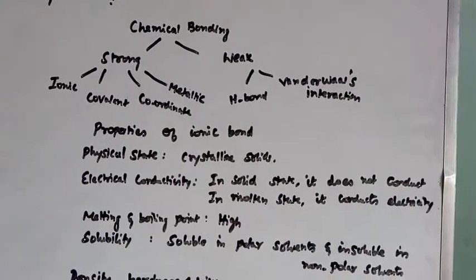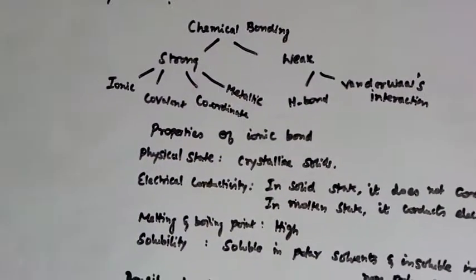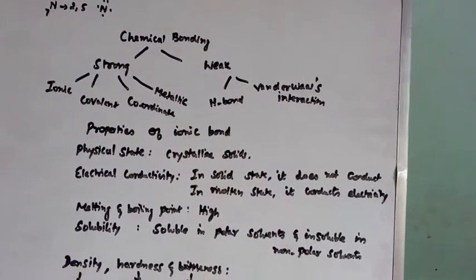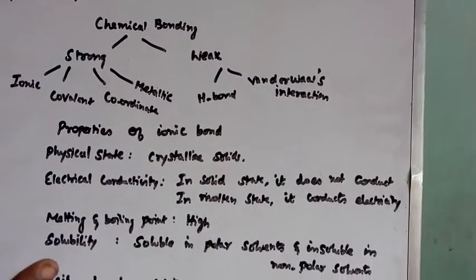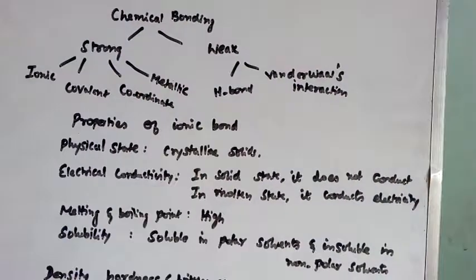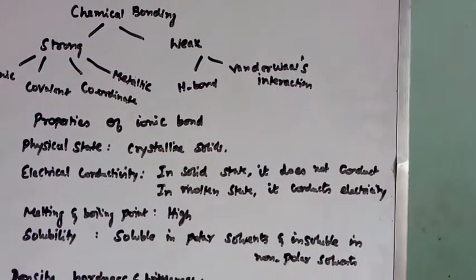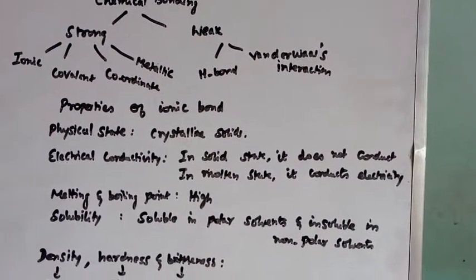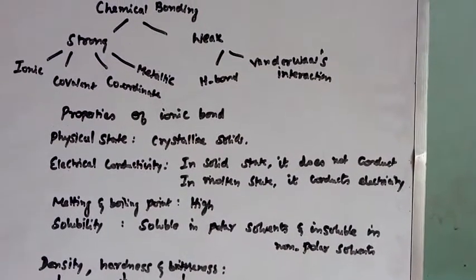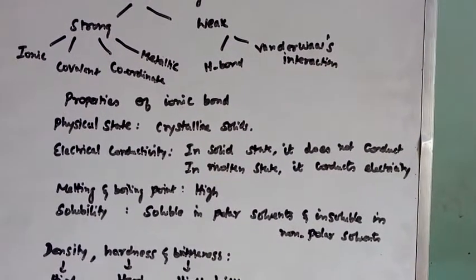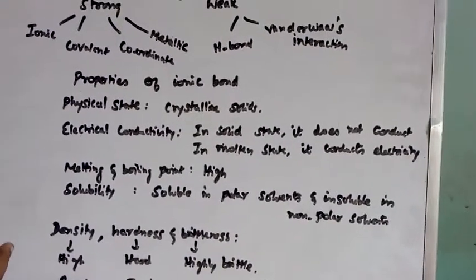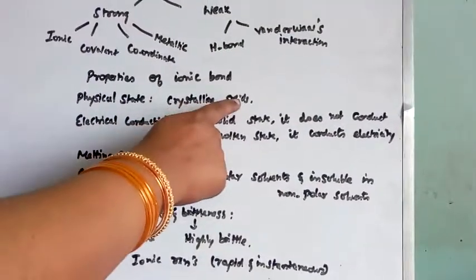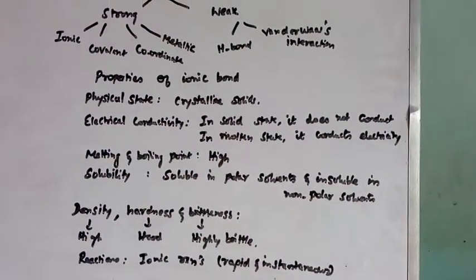First property is physical state. Ionic bond, how it is formed? It is formed by the electrostatic attraction between cation and anion. Na+ Cl-. Same manner, Mg2+ 2Cl-. Like that, ionic interaction will be there. That is strong kind of interaction. So always it occurs as crystalline solids at room temperature.